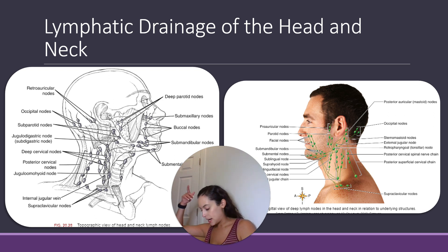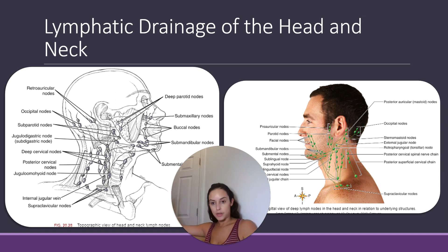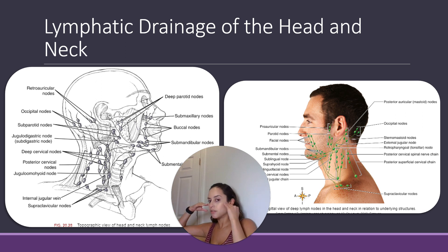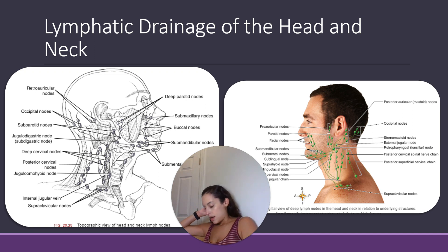These drain the nose, the eyelids, the frontal temporal scalp, the external acoustic meatus, and the palate. A lot of these structures make sense given their location — of course the parotid would drain something around the ear, around the eyes, and around the nose, because it's halfway up your head at about the same level as your eyes and nose. They provide efferent flow to the superior cervical nodes.